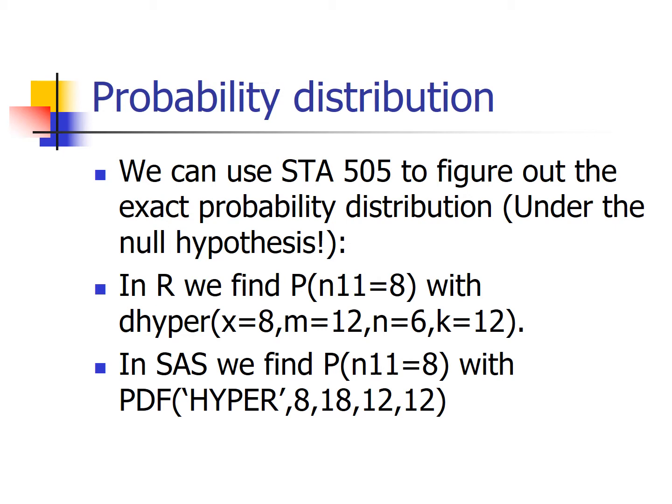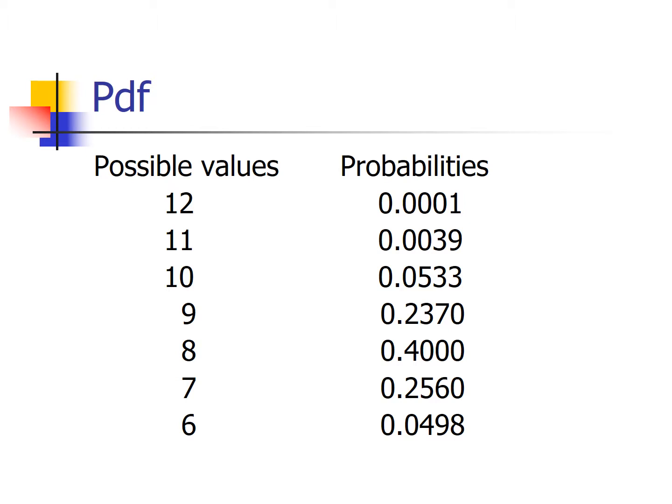The probability of the upper left-hand cell being 8 is about 0.3999, which I rounded to 0.4. You can then plug in x equals 6, 7, 9, 10, 11, and 12 to get all probabilities. Those are the possible values for the upper left-hand cell, with corresponding probabilities that all add up to one — there's a little rounding, so they may not add up exactly.